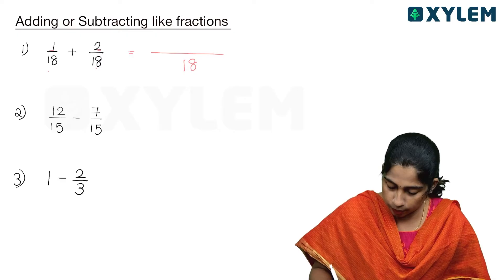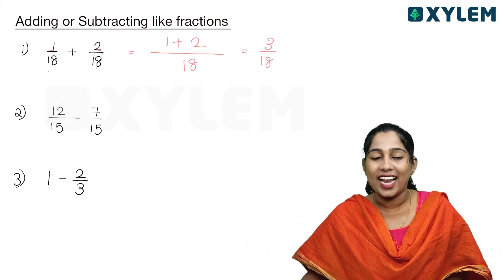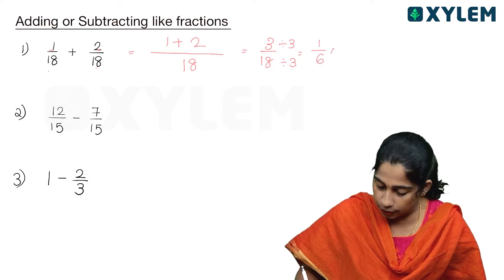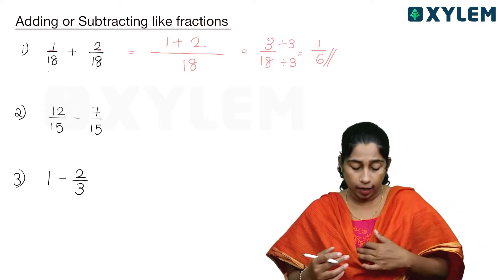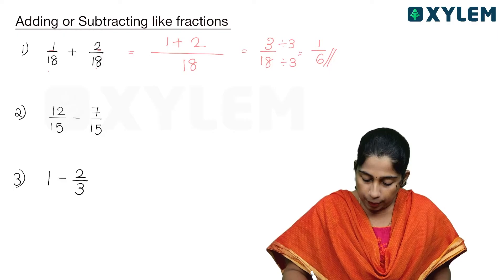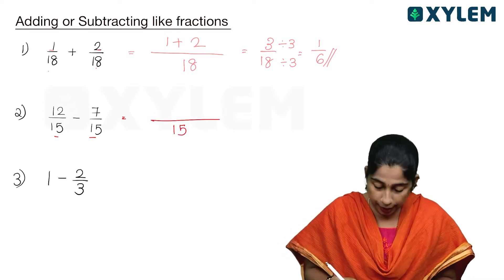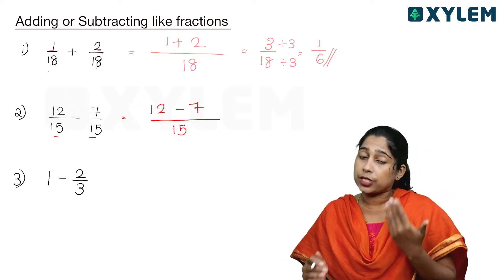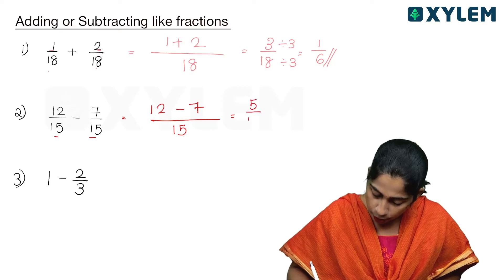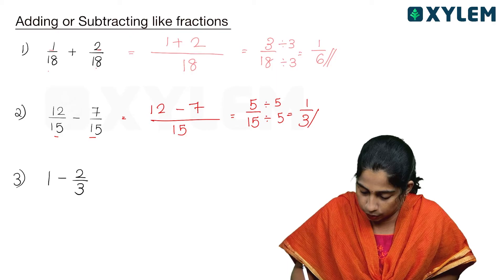This is the numerator — the numerator is added. The denominator is 18. By 6, by 6, and by 6. 12 minus 7 is 5 by 15.